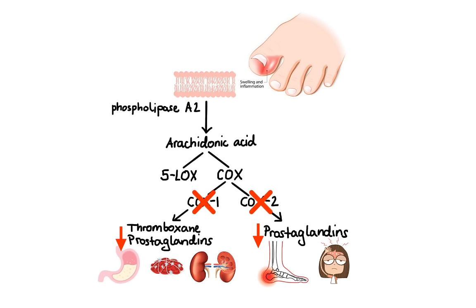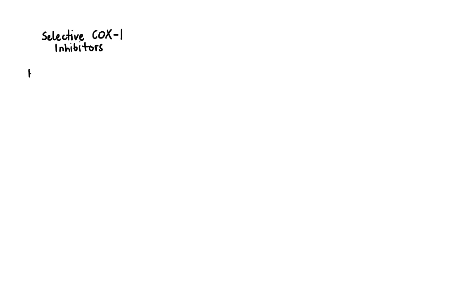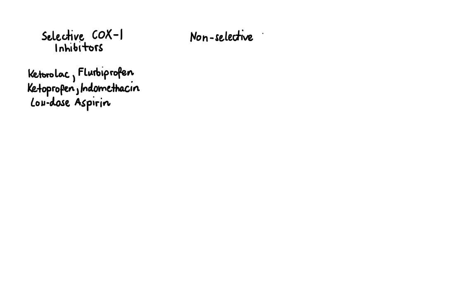Based on their selectivity for COX enzymes, NSAIDs can be divided into three broad categories. First, selective COX-1 inhibitors, which include ketorolac, flurbiprofen, ketoprofen, indomethacin, and low-dose aspirin. In the second category, we have relatively non-selective COX inhibitors, which include naproxen, ibuprofen, piroxicam, and diflunisal.